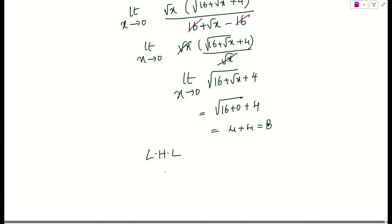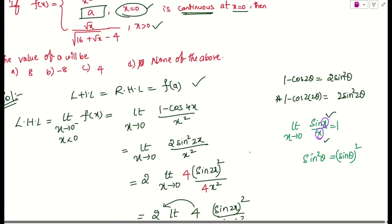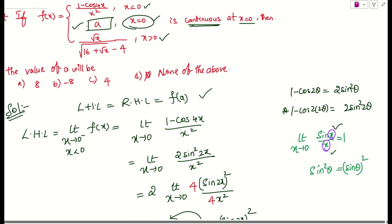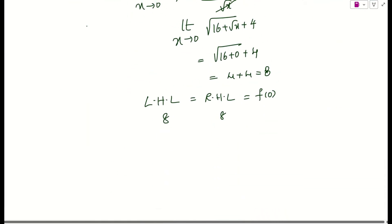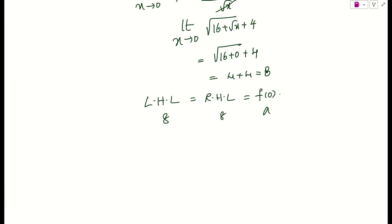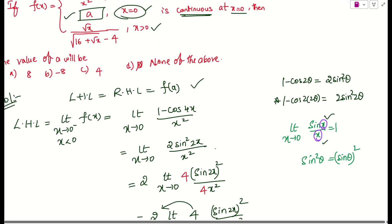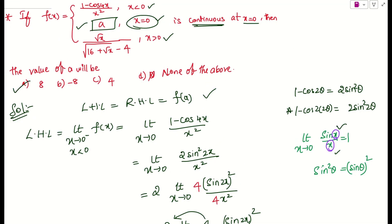Left hand limit is 8 and right hand limit is 8, and f(0) = a. Since left hand limit equals right hand limit equals f(0), the function is continuous when a = 8. So option A is the final answer. If you have any doubts let me know. Thank you.